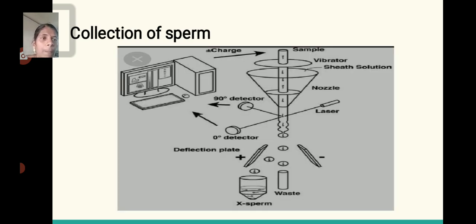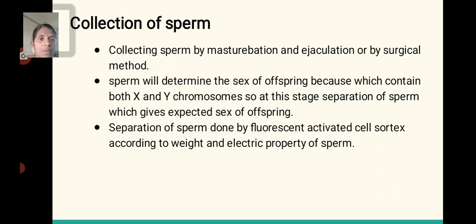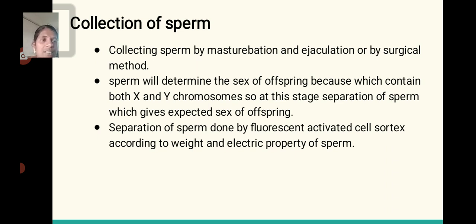Collection of sperm: Sperm is collected by masturbation and ejaculation, or by surgical method. Sperm determines the sex of offspring — sperm contain both X and Y chromosomes. Separation of sperm can predict sex of offspring. Sperm types are separated using fluorescent-activated cell sorting according to the optical and electric properties of sperm, analyzing X chromosome and Y chromosome-bearing sperm.